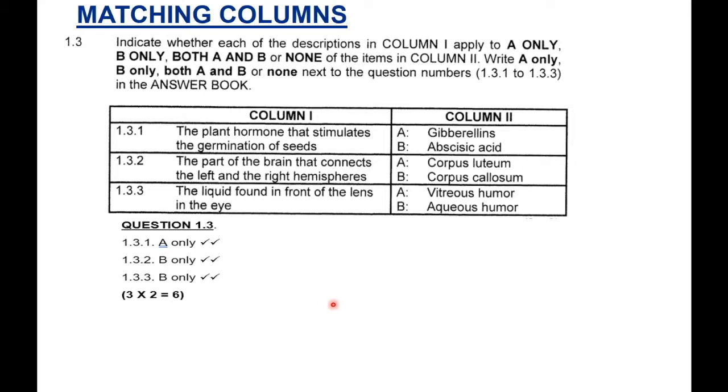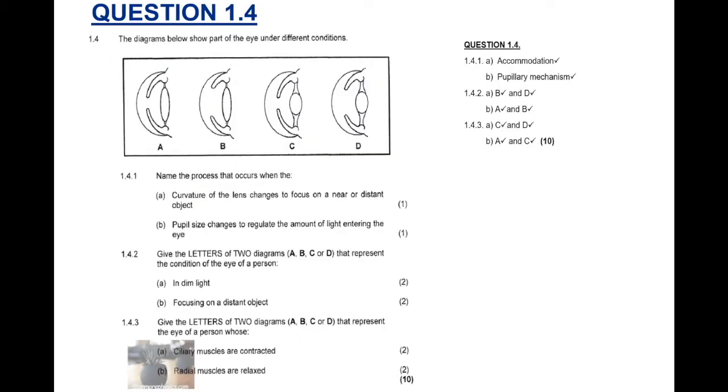Let's move to now question 1.4. Question 1.4. I really liked this question when I saw it. The diagrams below show part of the eye under different conditions. Now, if you look at the eye, you must really know accommodation and pupillary mechanism very well for you to understand this question. 1.4.1: Name the process that occurs when the curvature of the lens changes to focus on a near or distant object. Now, whenever you see near or distant object, that term, that process, is accommodation.